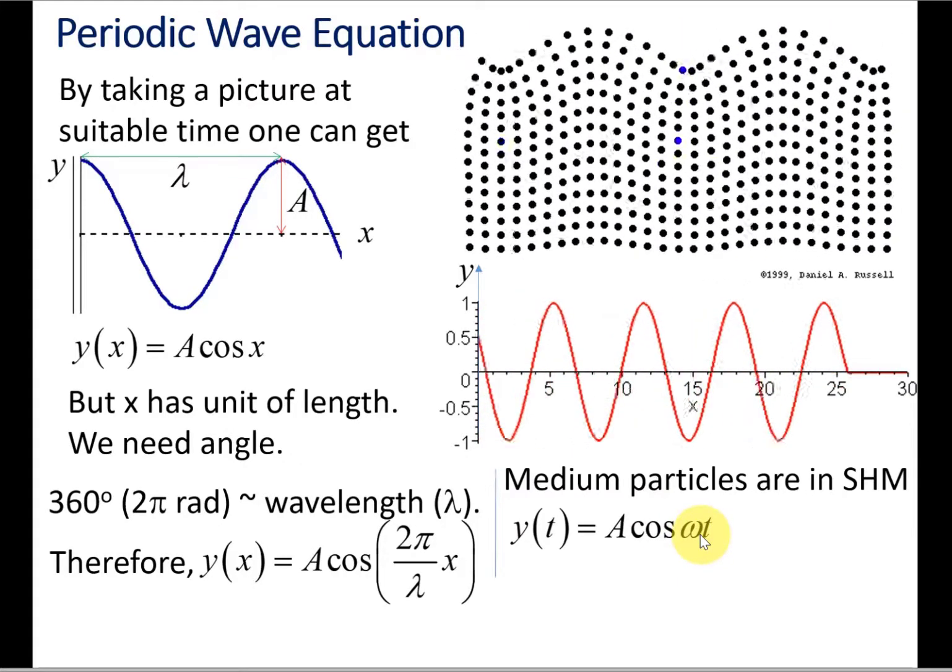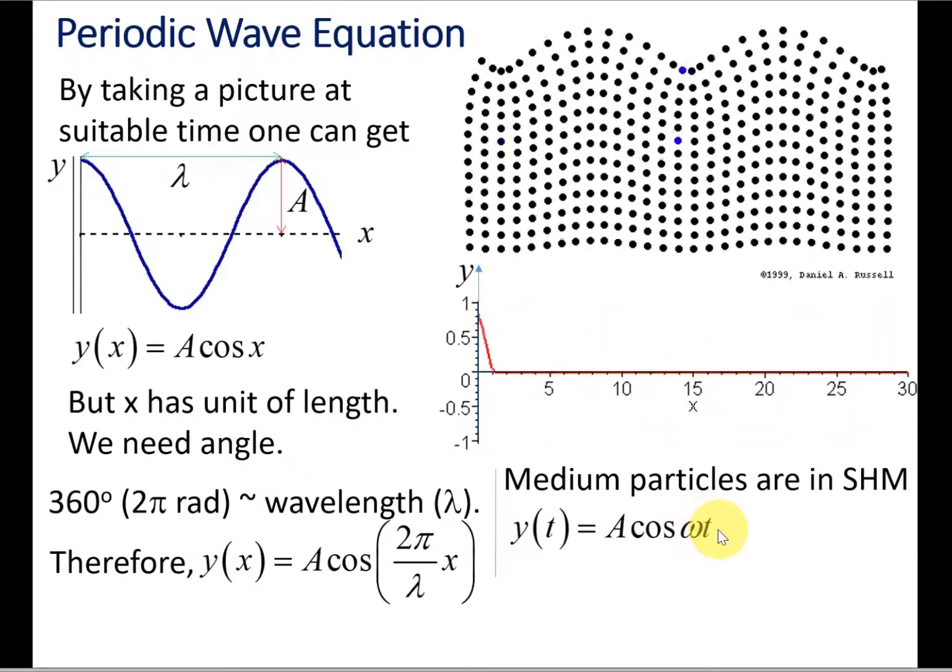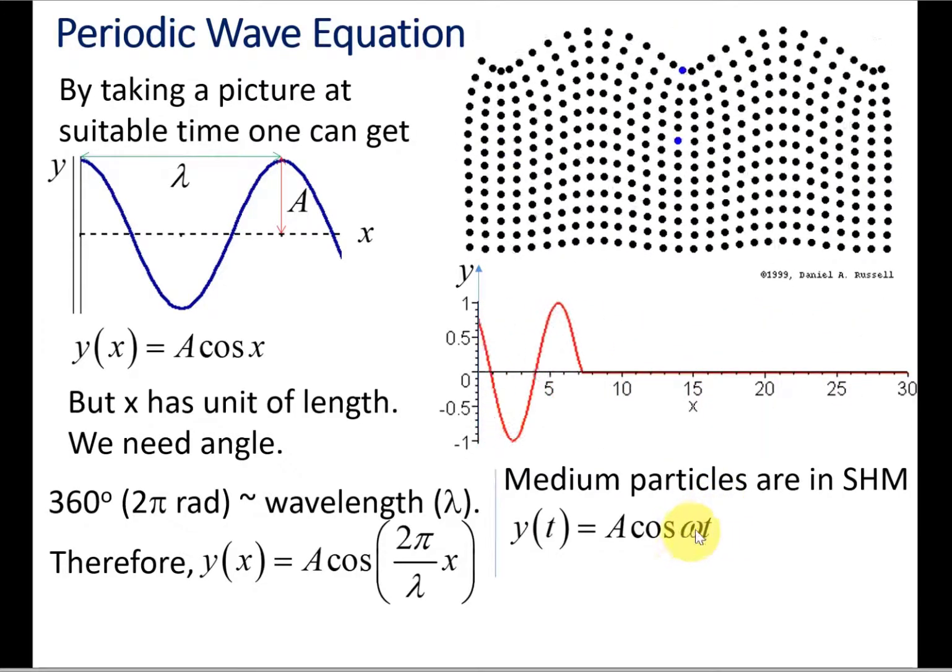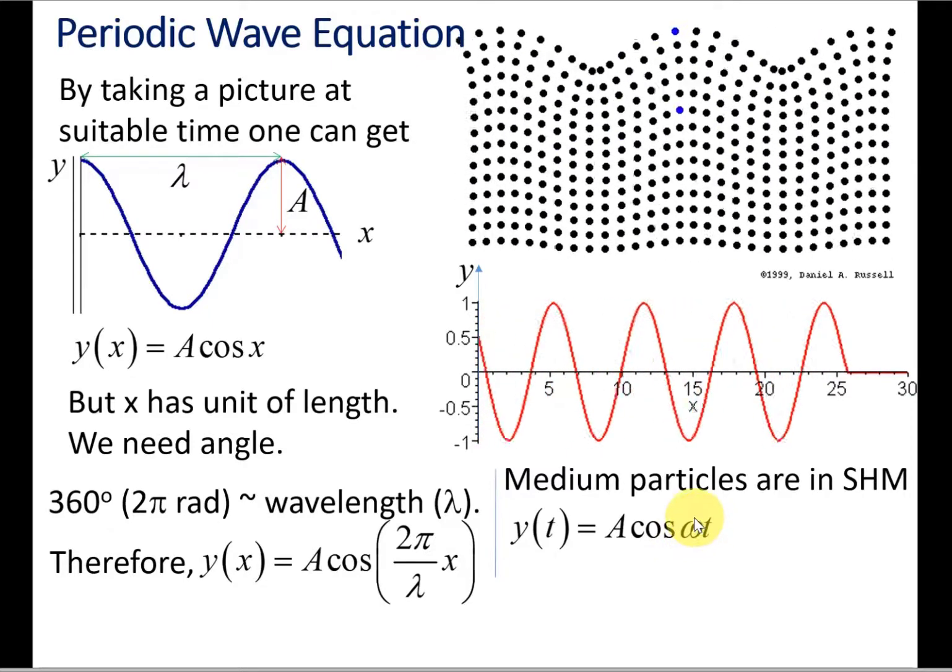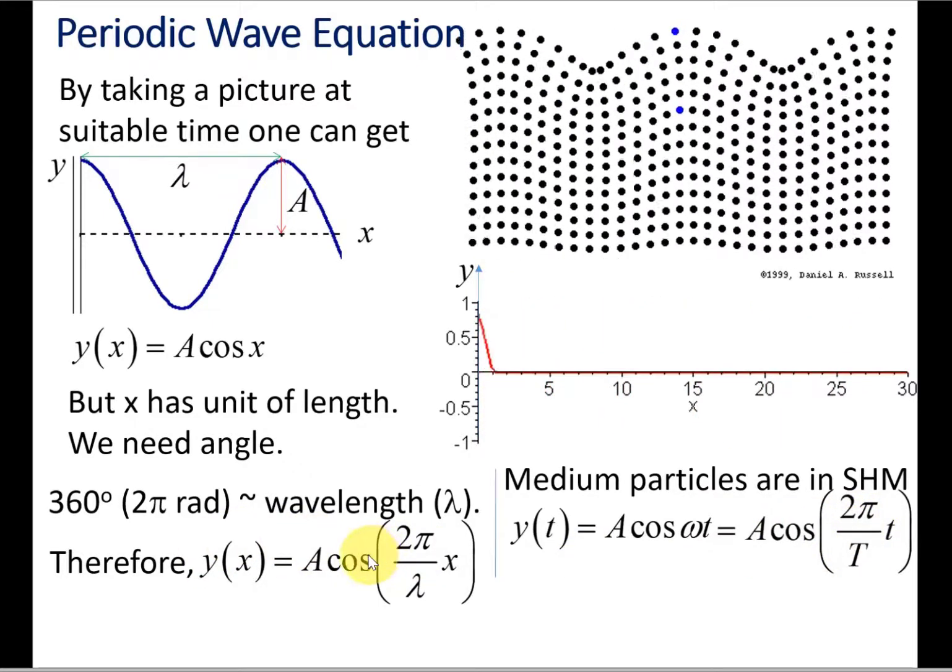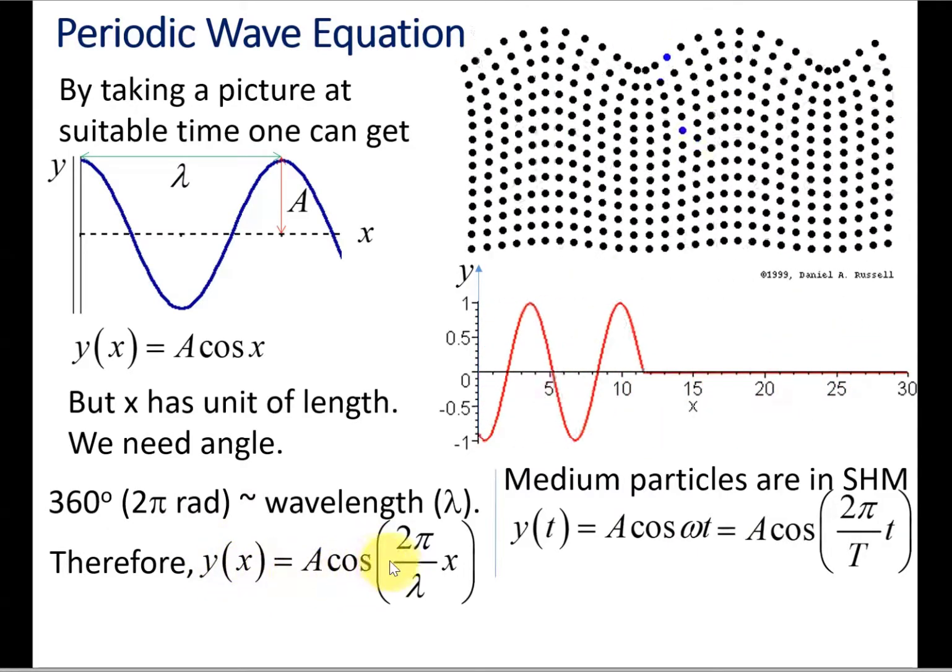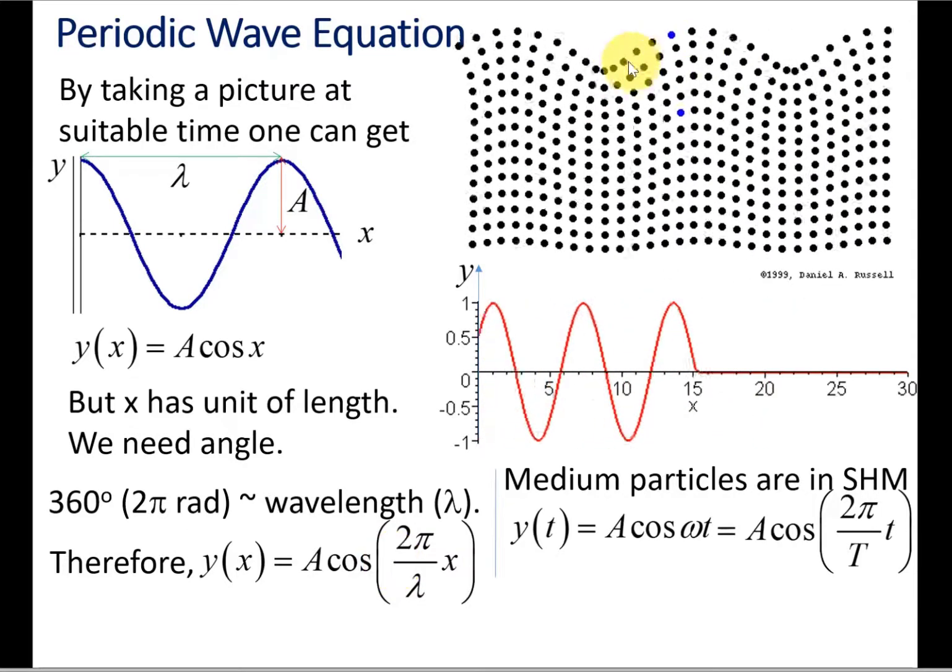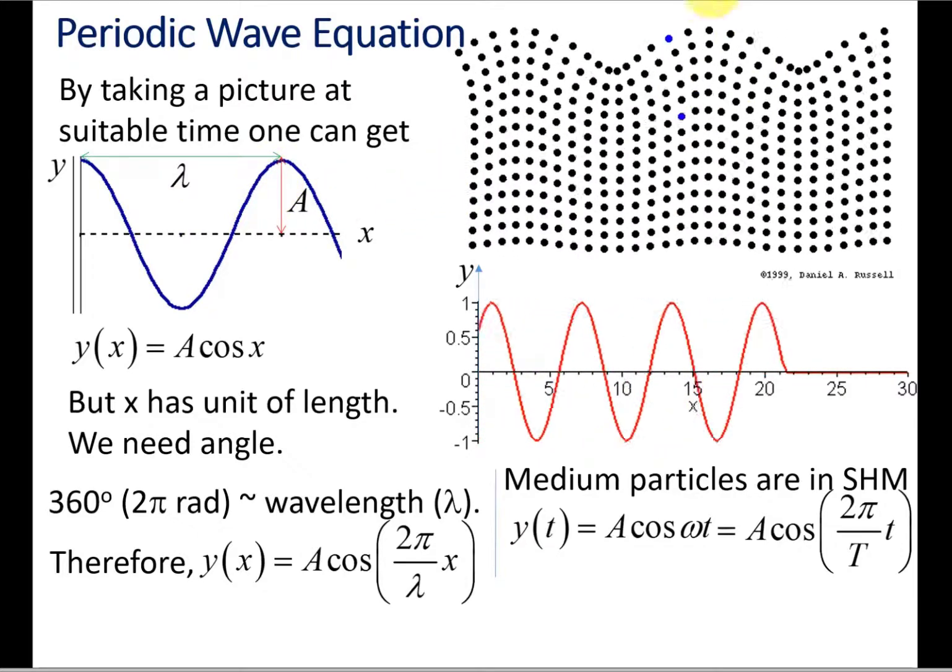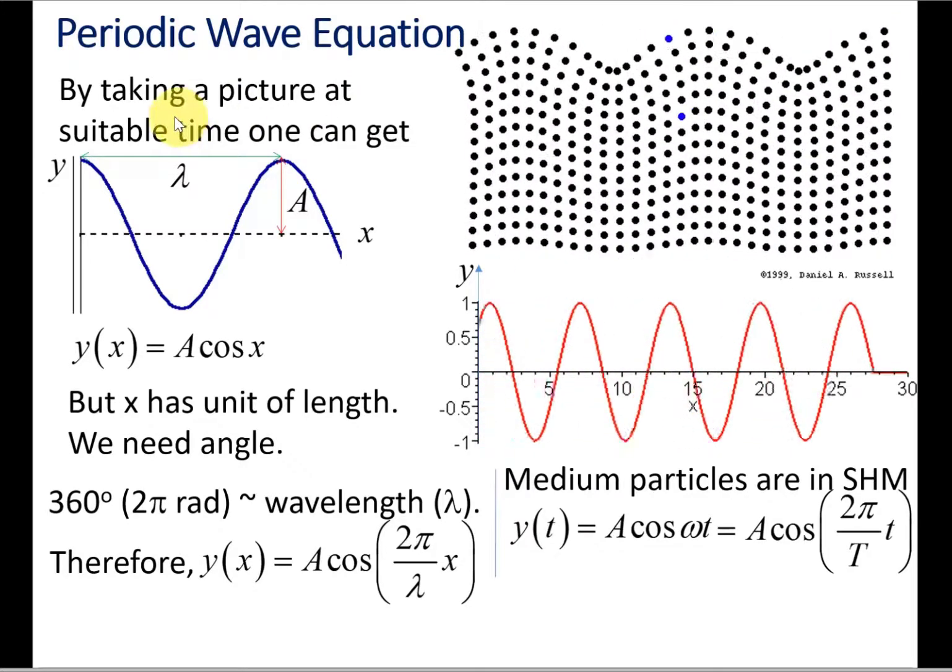Theta can also be written in terms of angular frequency times time. That means another way to write this: omega is 2π over period T. So this and this, they look similar. The y(x) equation tells us displacement of each particle from equilibrium position over space x at one particular time.